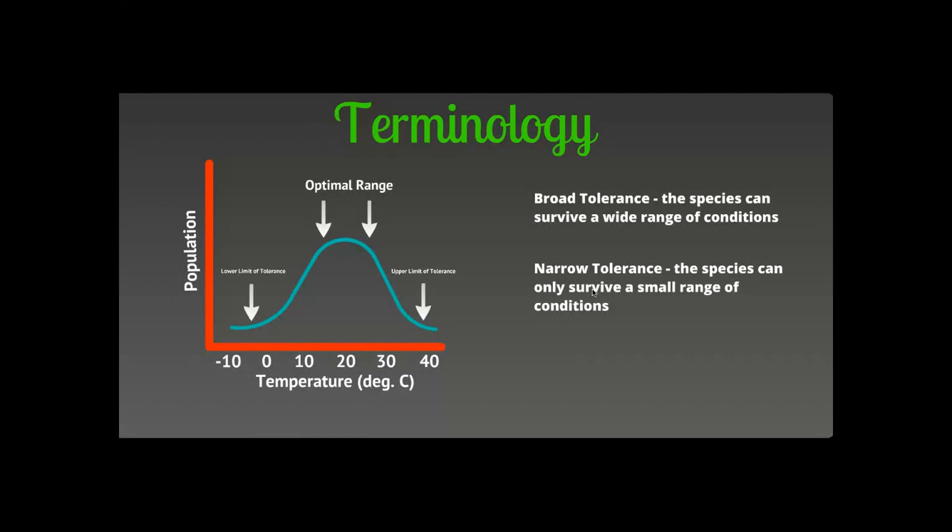And then we have narrow tolerance where the species can only survive in a small range of conditions. And this is very important to biologists because when we look at maybe trying to protect endangered species, species that have a narrow tolerance that can only exist in certain environments, they're much harder to protect than a species with a broad tolerance that can live just about anywhere.